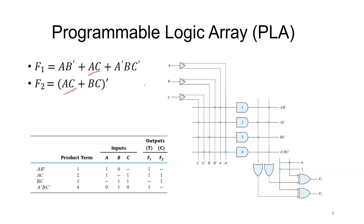The product terms are written first, then the inputs A, B, C and the two outputs F1 and F2. In the table, a complement (dash) represents 0, an uncomplemented variable represents 1, and a term not present is marked as dash. For AB': A=1, B=0, C=dash. This is filled similarly for all product terms. AC is covered in both F1 and F2, while AB' is covered only in F1, so it is marked 1 for F1 and dash otherwise. This forms the PLA programming table.